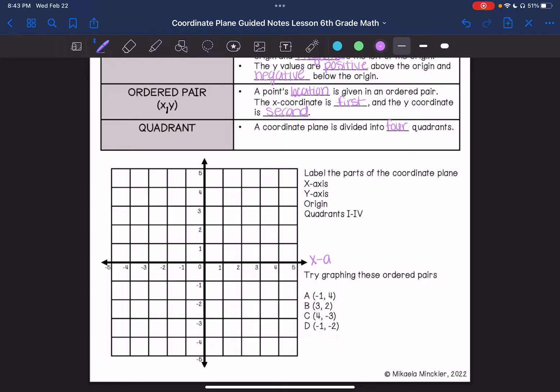So we have the x-axis here. We have the y-axis. Then we are going to label the origin. The ordered pair for the origin is 0, 0.